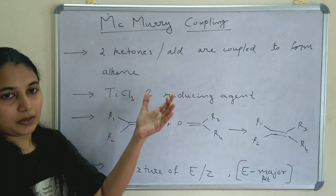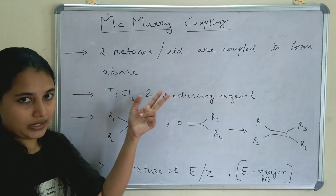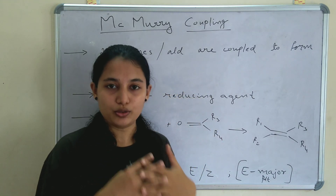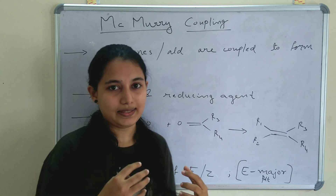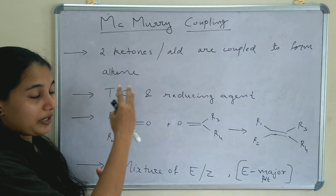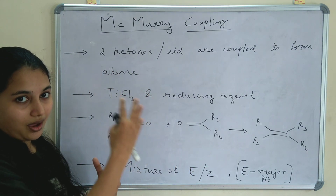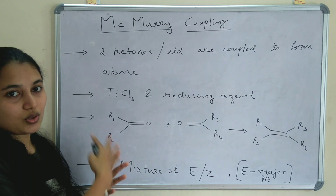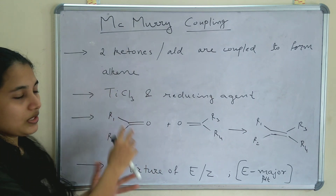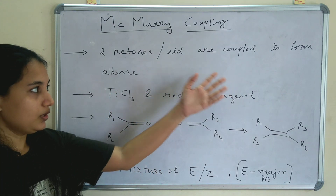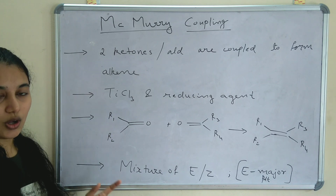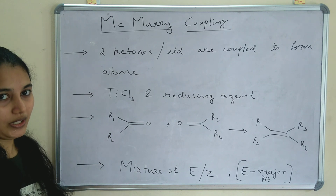In McMurry coupling, two ketones or two aldehydes are coupled to form an alkene. So the McMurry coupling reactants are ketones or aldehydes. When two ketones or aldehydes are coupled to form an alkene, it is called McMurry coupling.